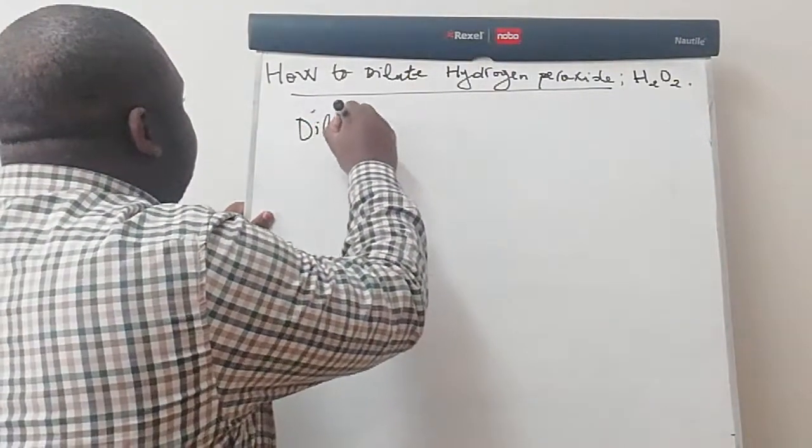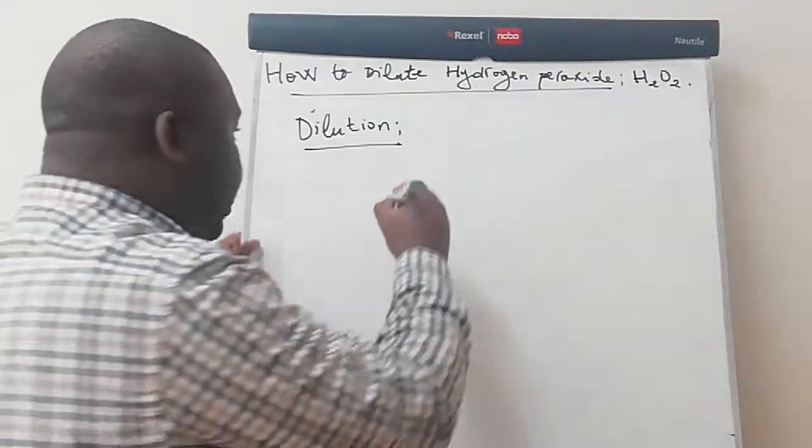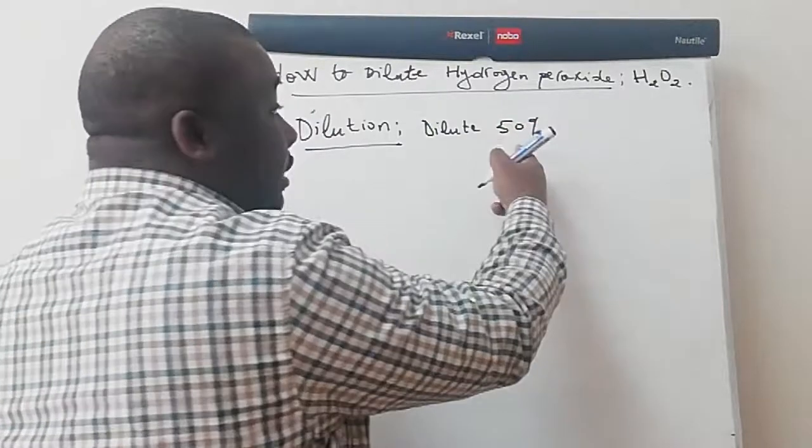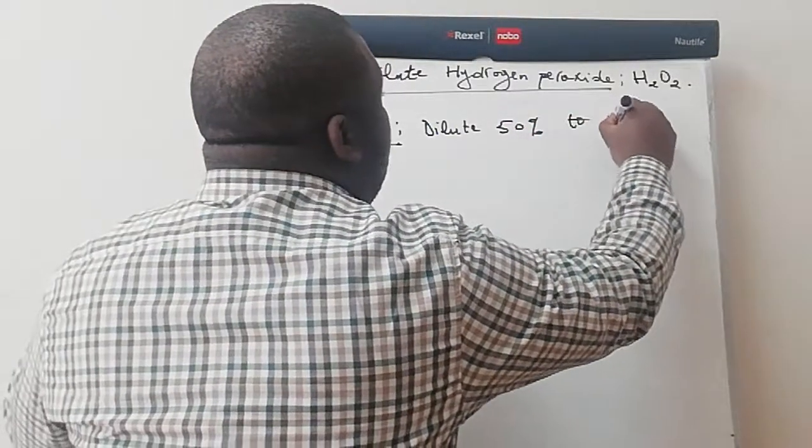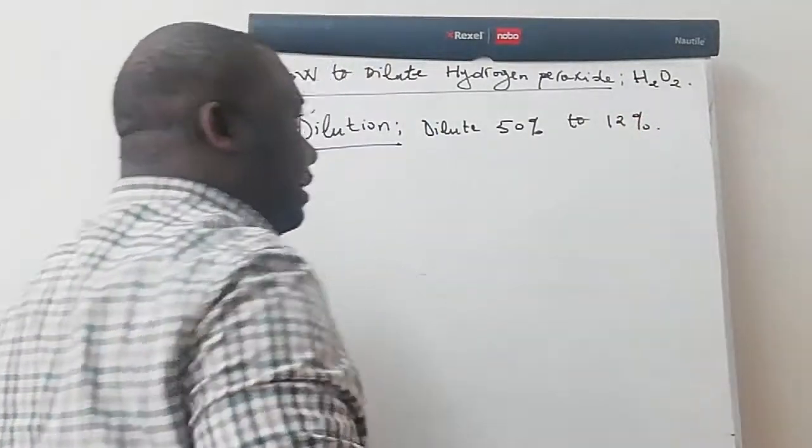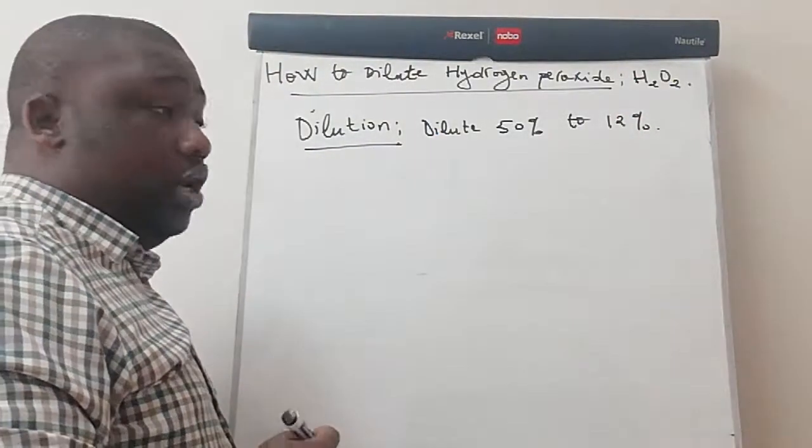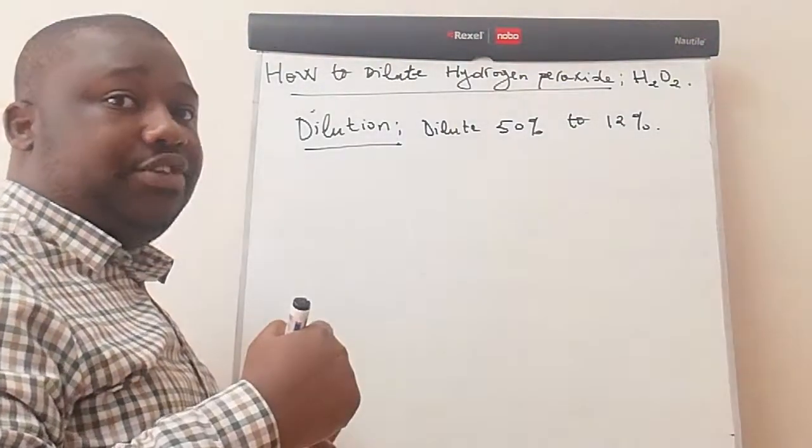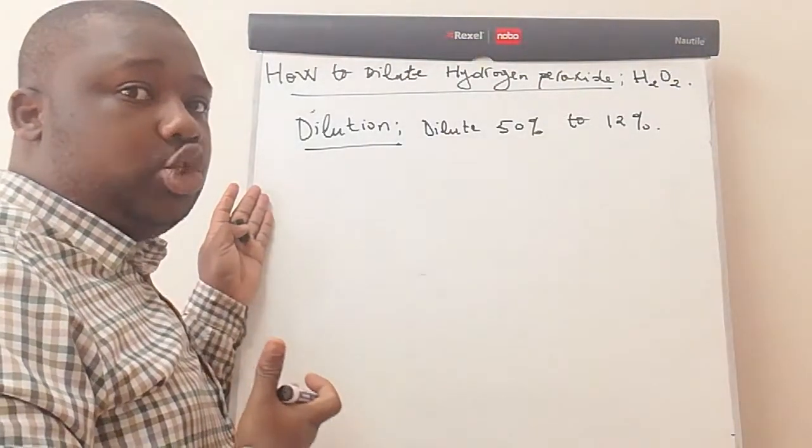We are actually diluting 50%. This is what I actually get from my supplier, to 12% hydrogen peroxide. First of all, the formula of dilution, you can check on my previous video, but still, it won't stop me to show you how to do calculations today.